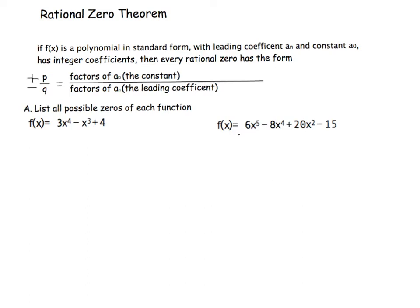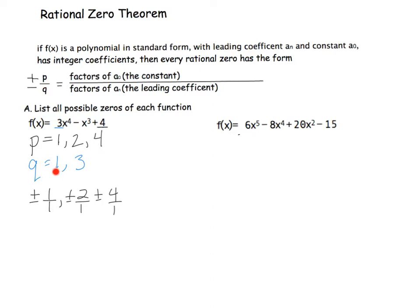Let's look at our first example and list the factors of our constant. p is our factors of the constant 4, so the factors of 4 are 1, 2, and 4. And then q is our factors of our leading coefficient. The factors of 3 are 1 and 3. So then we can make combinations of these and it will give us our possible rational zeros. We have plus or minus 1 over 1, plus or minus 2 over 1, plus or minus 4 over 1 — taking each of the p's and dividing them by that q. Then we take each of those p's and divide them by the other q.